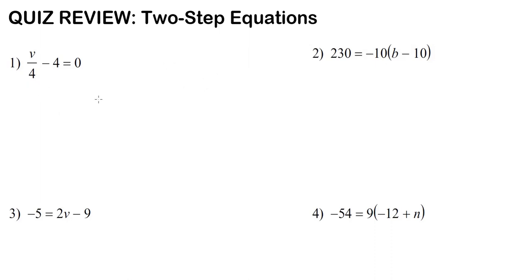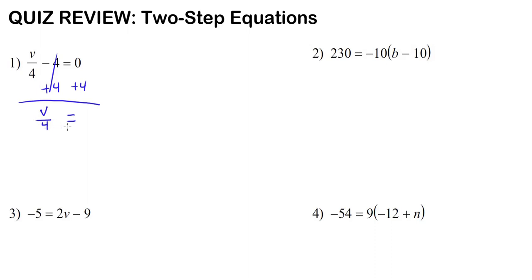Step one is to undo addition or subtraction. So we're going to get rid of this negative 4 by adding 4 to both sides. Remember that the equal sign is the middle, so that's what gives you left or right. On the left, the 4 is cancelled out, leaving us with v over 4. And on the right, 0 plus 4 is 4. So now we have v divided by 4 equals 4.